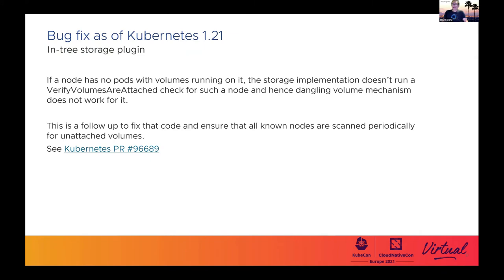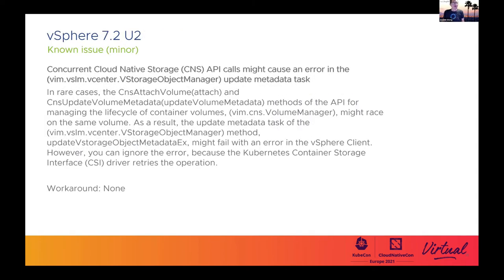Here's a bug fix related to the now-deprecated in-tree storage plugin. It relates to cleanup of orphan volume attachments, and more details can be found at the link in this slide. Next is a known issue that is not resolved, where API calls might cause an error. You can read more at the link.